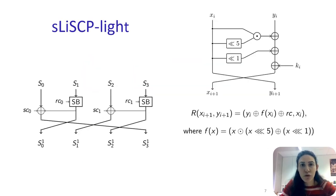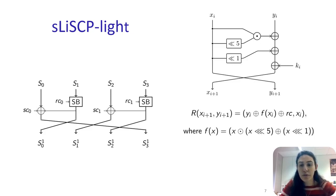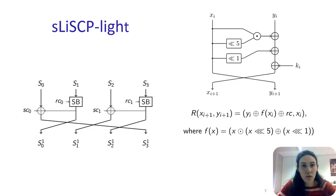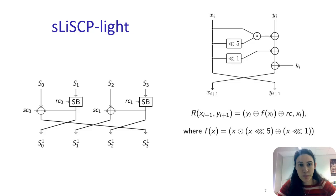The permutation used in SPOC is the SLI-SEP light permutation. The left figure shows one step of this permutation. First, the state is divided into four equal sub-blocks. Then a S-box layer is applied to half of the state and a constant is added to the other half of the state. Finally, the sub-blocks are permuted.